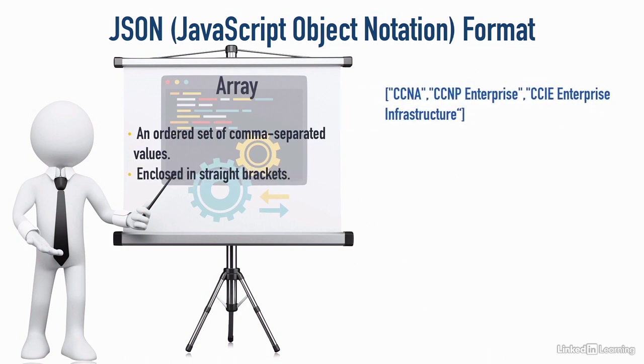Here's an example. Here are some certifications that Cisco has. And these are string values, so they're enclosed in quotes. But I've got CCNA in quotes, comma. That's the first value. CCNP Enterprise in quotes. That's the second value and another comma. And CCIE Enterprise Infrastructure enclosed in quotes. That's a third value. This is very similar to something we're going to be seeing with Python programming later on, called a Python list.